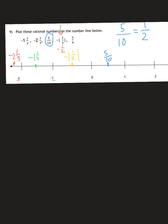Last but not least, we have 3 fourths, which is a positive number. It should be about 3 fourths of the way between 0 and 1, and that's how you plot your numbers.